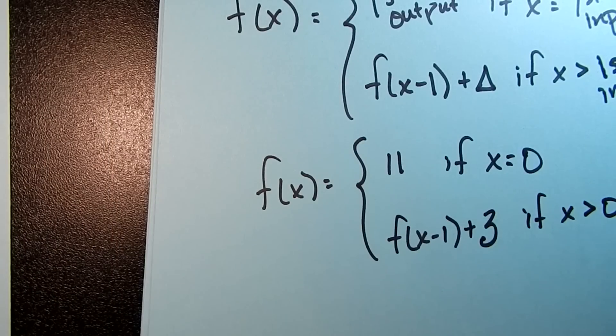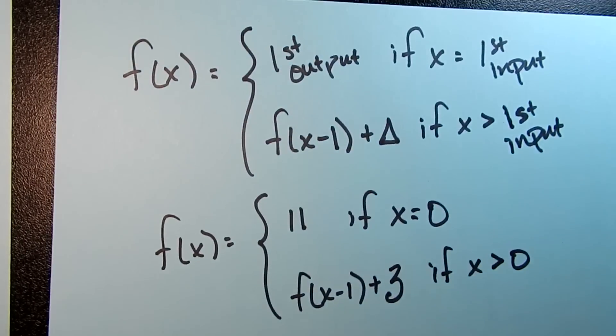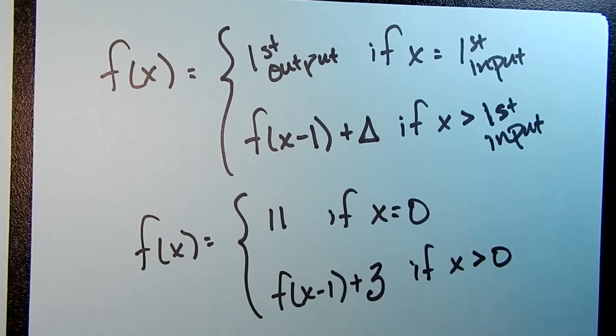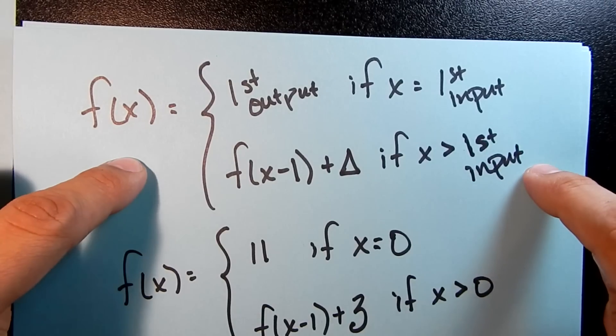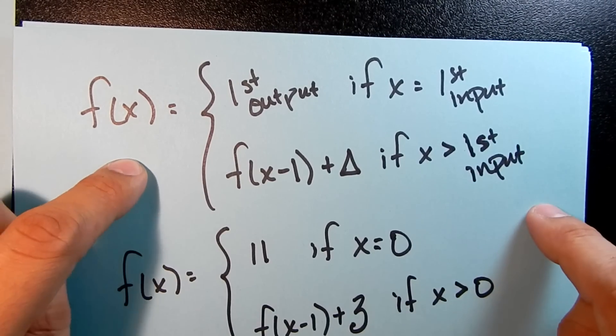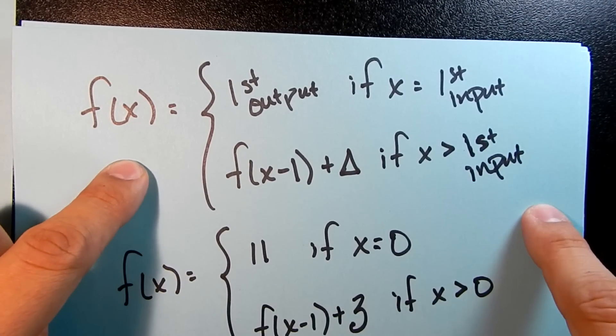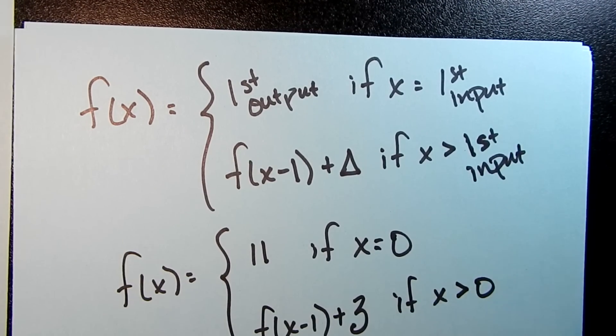So a recursive rule for a linear function is just that. So it follows this general format. And it doesn't look friendly. But once you get used to using them, they're pretty straightforward.